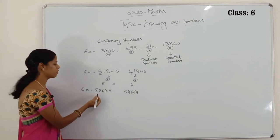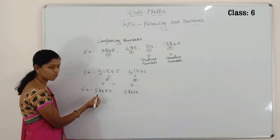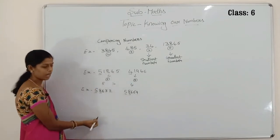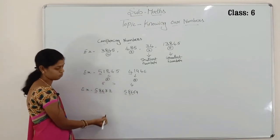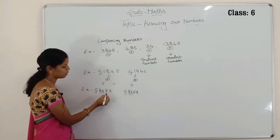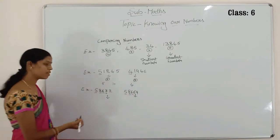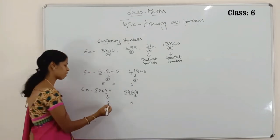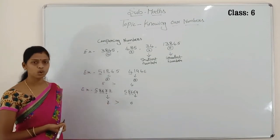Both first digits are the same. You have to observe the first digit — it's 5 and 5. Next, we move to the next digit — 8 and 8. Now we move to the hundreds place — 6 and 6. Next, observe the tens place: here we have a 7 and here we have a 6. Which is the greatest — 7 or 6? We know 7 is greater than 6. Now you know how to compare numbers.